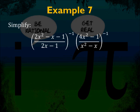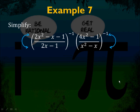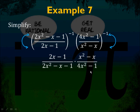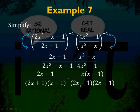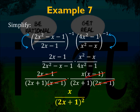Example 7: (2x squared minus x minus 1) over (2x minus 1), all to the negative 1 power, times (4x squared minus 1) over (x squared minus x), to the negative 1 power. A negative 1 exponent means take the reciprocal. So take the reciprocal of each expression: (2x minus 1) over (2x squared minus x minus 1), times (x squared minus x) over (4x squared minus 1). Factor: x squared minus x factors out an x, giving x(x minus 1); 2x squared minus x minus 1 factors to (2x plus 1)(x minus 1); 4x squared minus 1 is a difference of squares, (2x plus 1)(2x minus 1). Cancel: (2x minus 1)s and (x minus 1)s drop out — leaving x over (2x plus 1) squared.